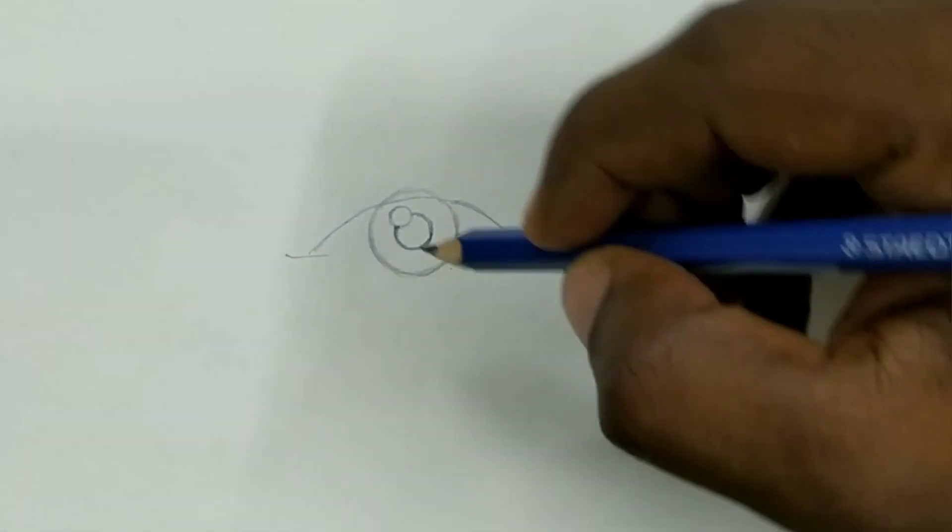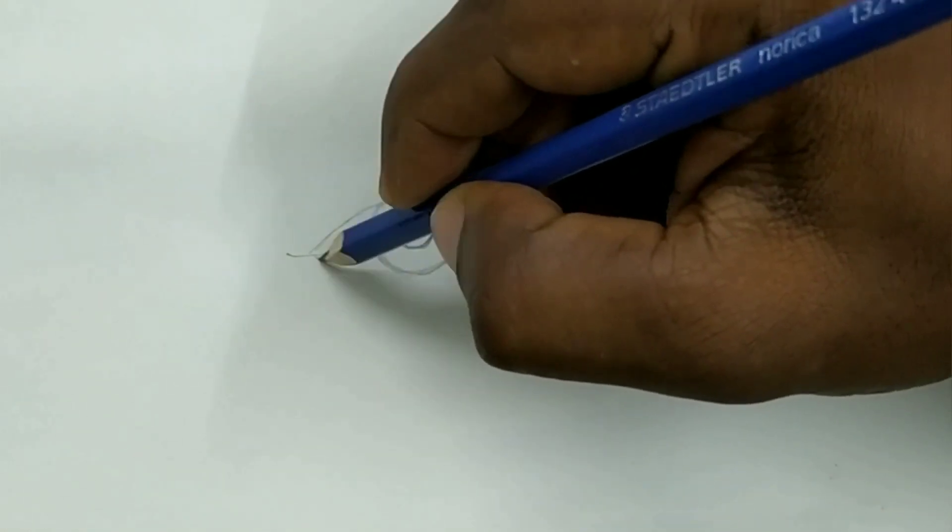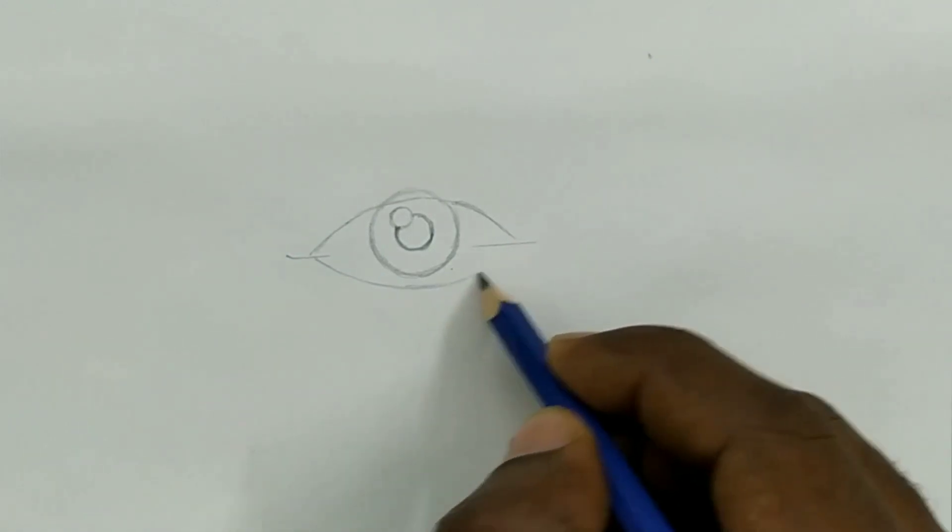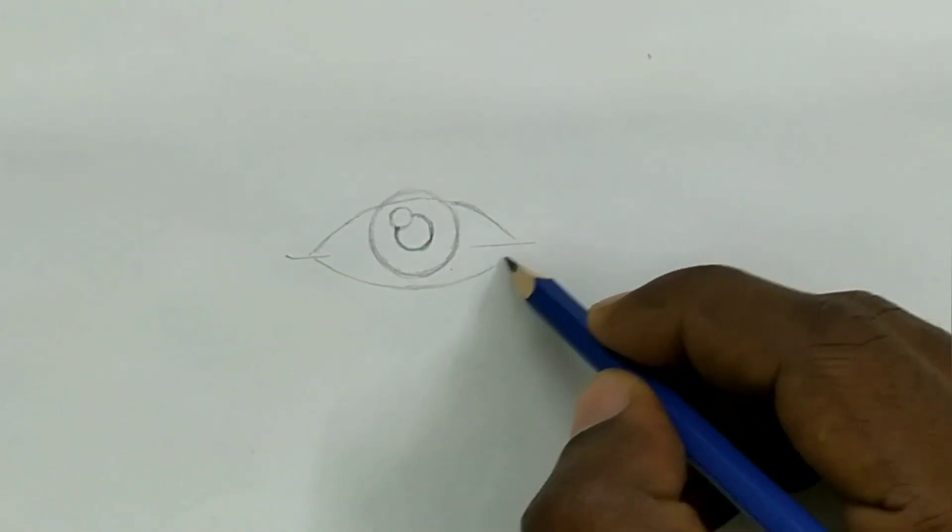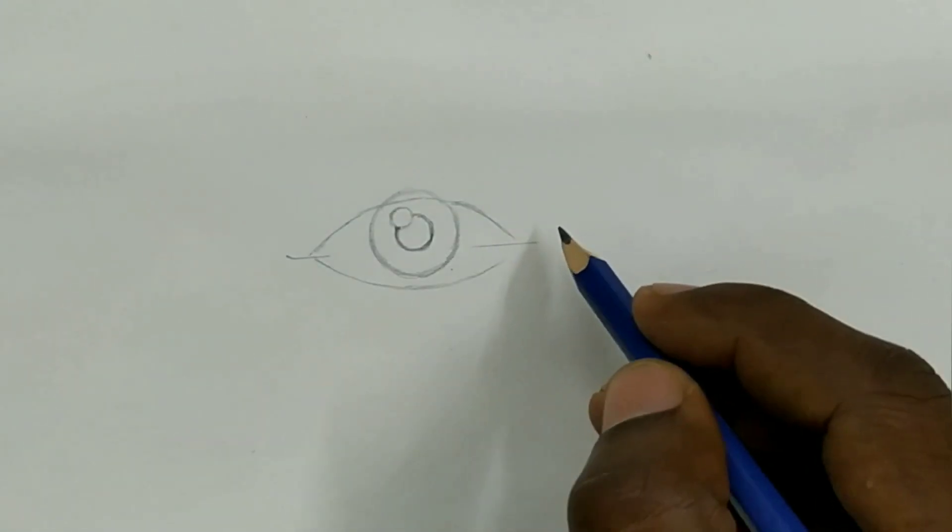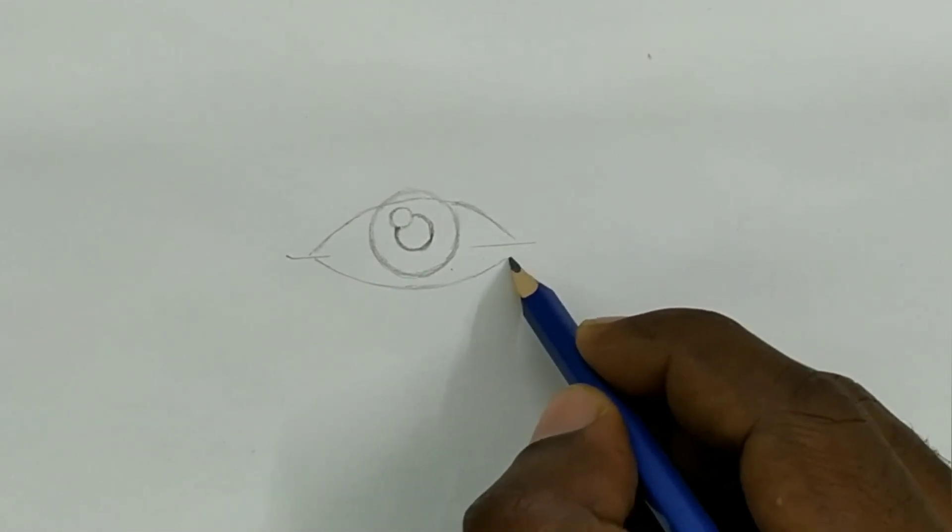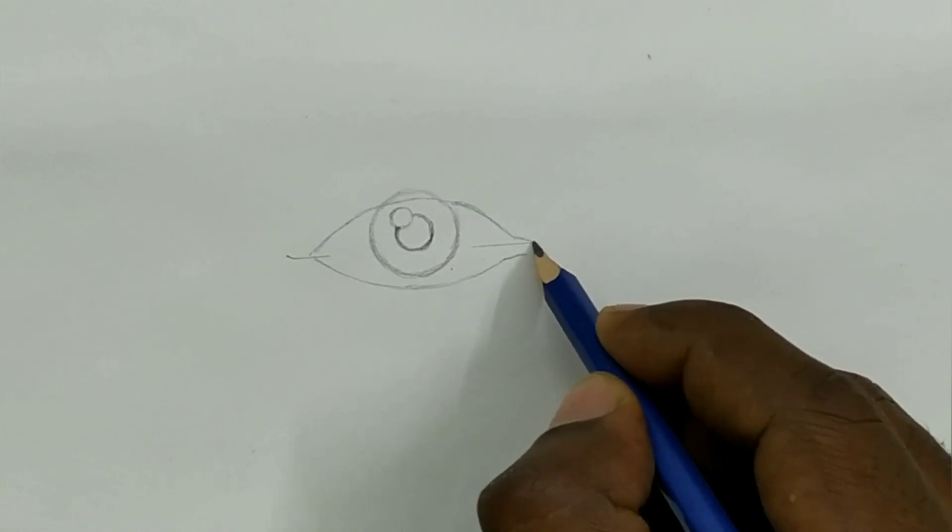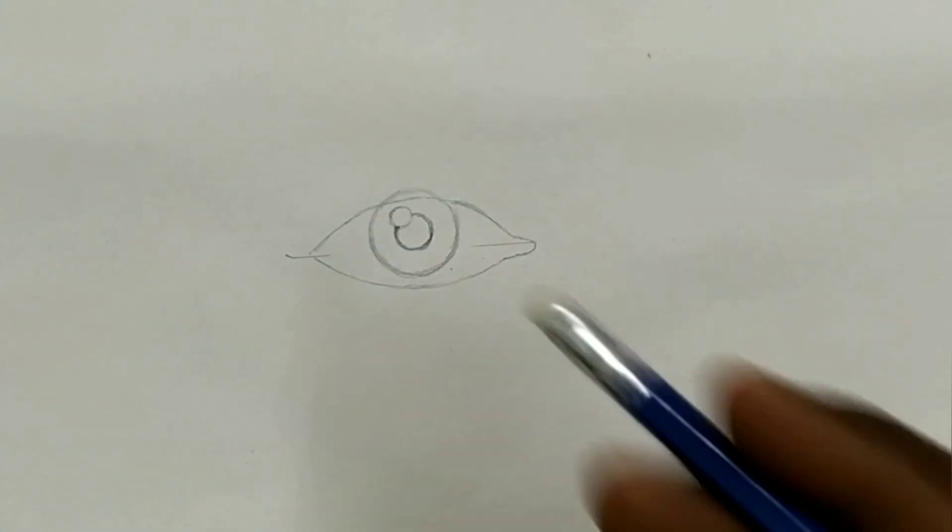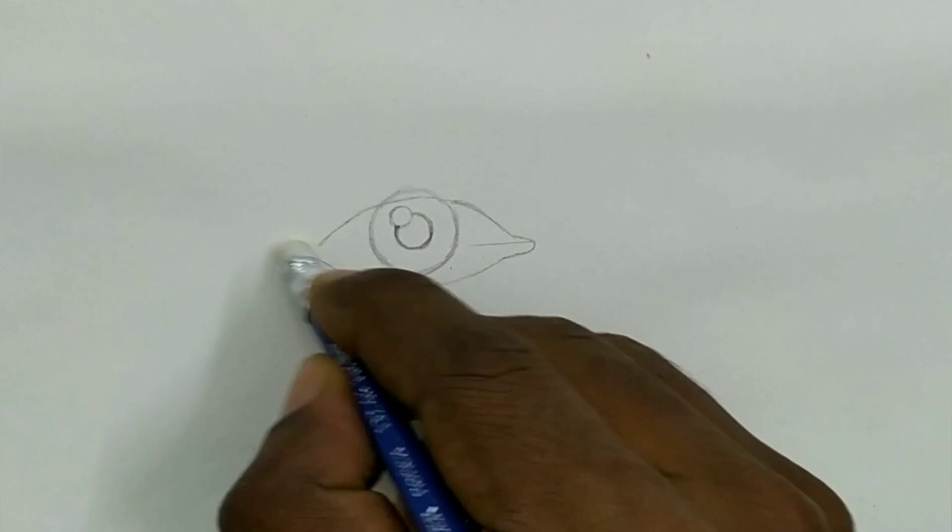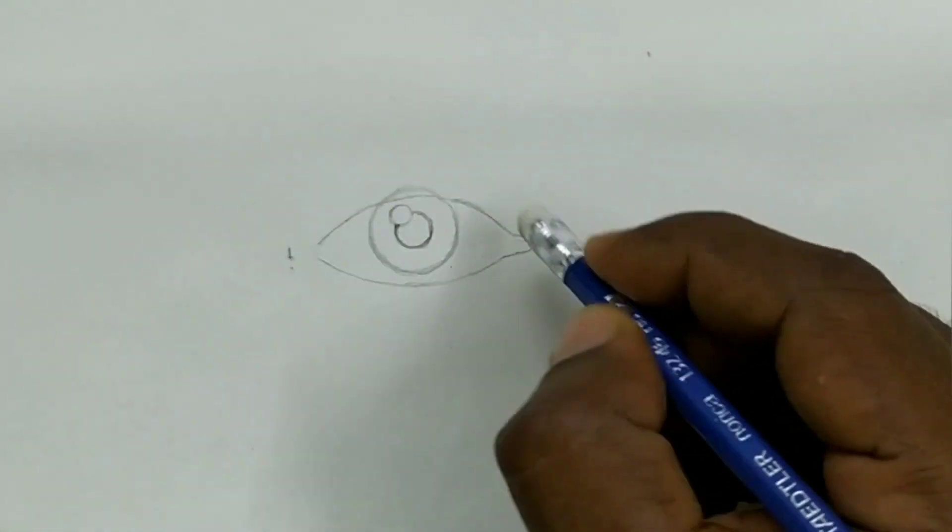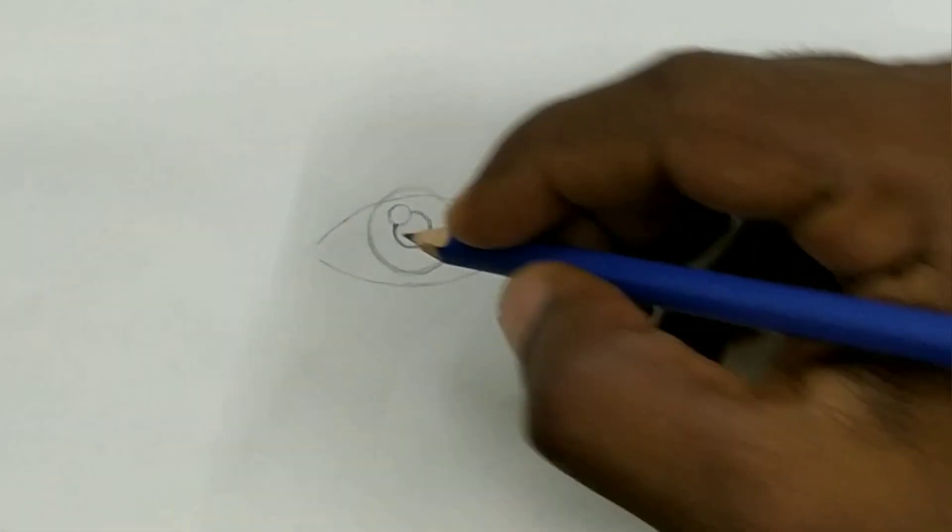And this time lower eyelid. Leave little bit gap between eyelid and the iris. After finishing the outline let us erase the reference line and make the outline complete.